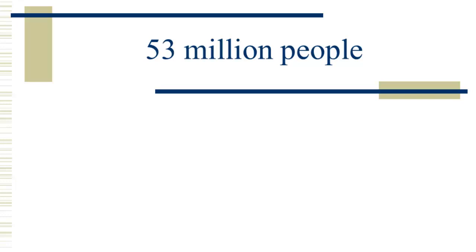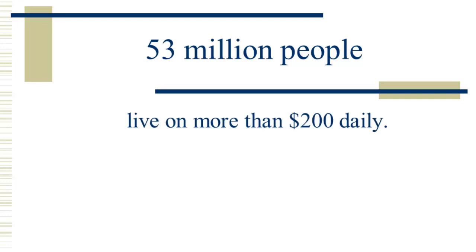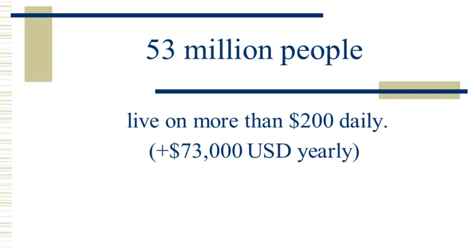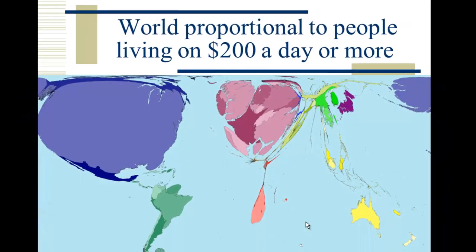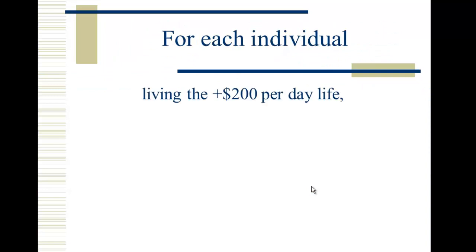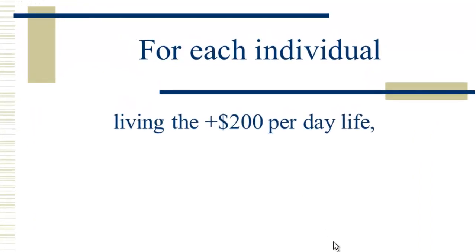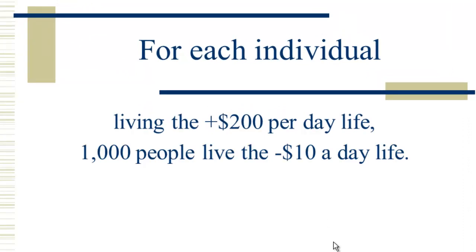Now, 53 million people in 2005 were living on $200 a day or more — that amounts to $73,000 or more per capita. So where do those people live? Here we've drawn the world proportional to where people living on $200 a day or more live. Now you can certainly see Western Europe, Japan, the United States, and Australia. The only part of Africa that's visible is South Africa. This gives us a sense of the great distortions in the world in terms of income — for every individual living on more than $200 a day, there are a thousand people living on $10 or less.